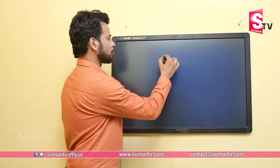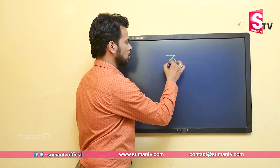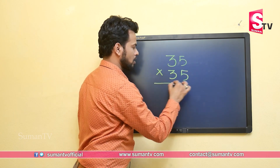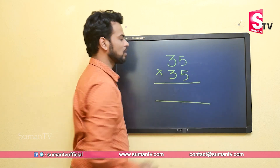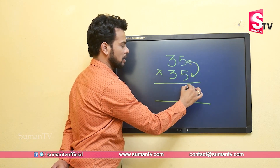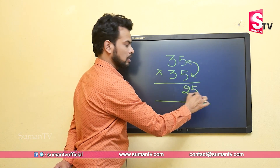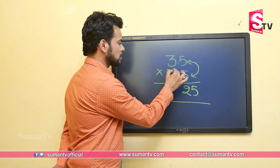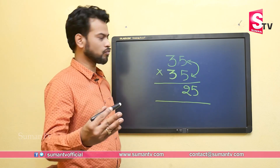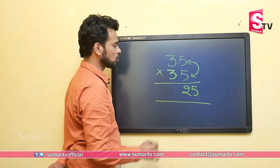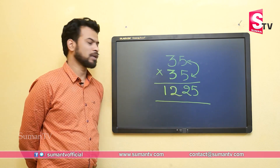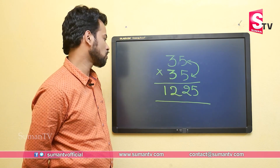Let's take another example: 35 multiplied by 35. First, we multiply unit with unit — 5 multiplied by 5 is 25. The tens digit is 3 and 3's successor is 4, so we multiply 3 with 4, which is 12. So 35 multiplied by 35 is 1225.